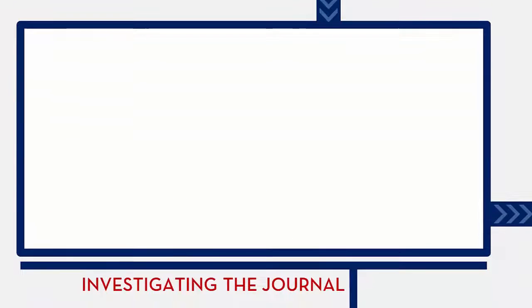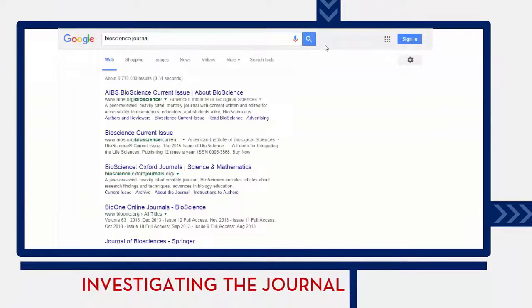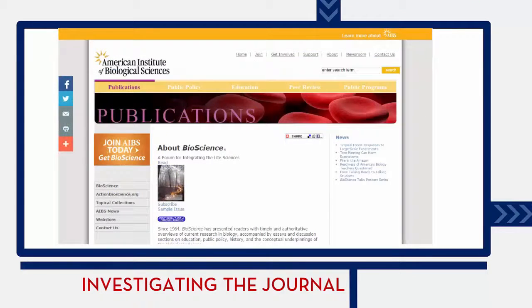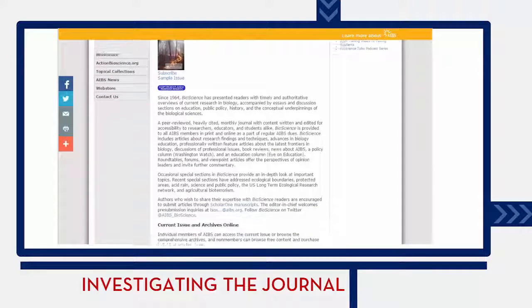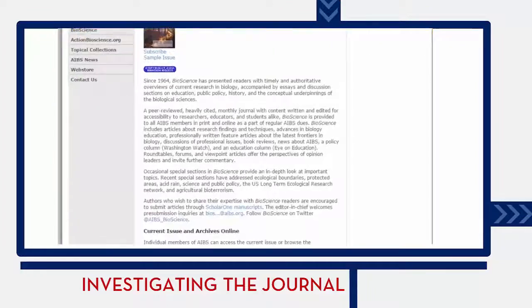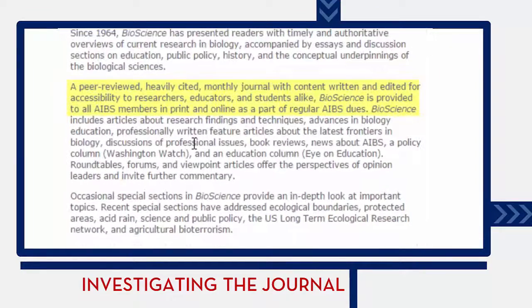You can also do a quick Google search to find out if the journal the article was published in is reputable and peer-reviewed. Usually journals will include this kind of information on the About section of their website.